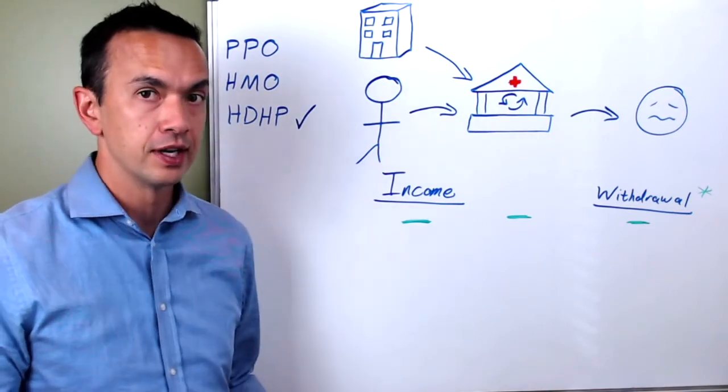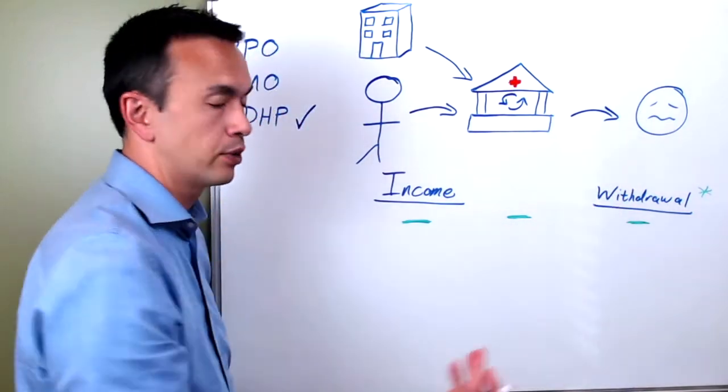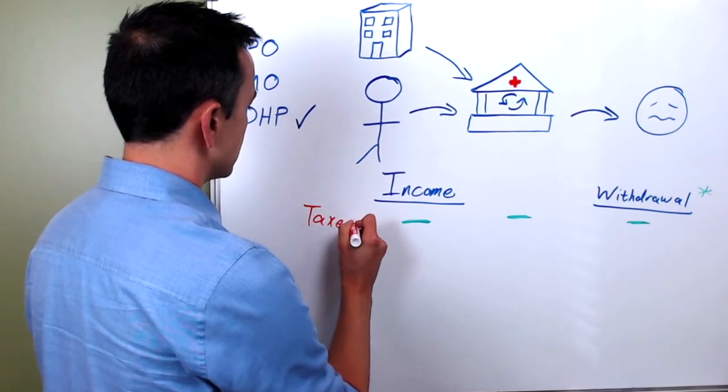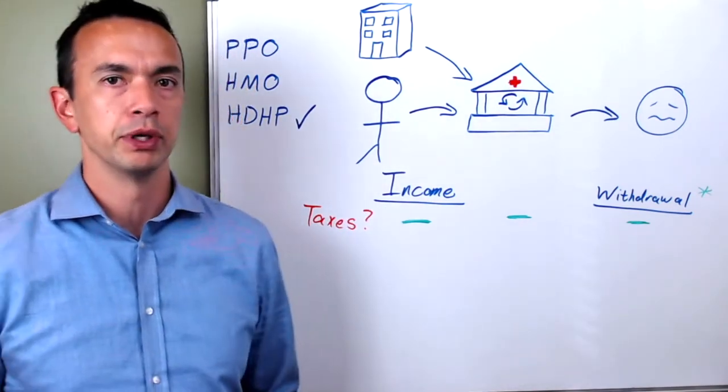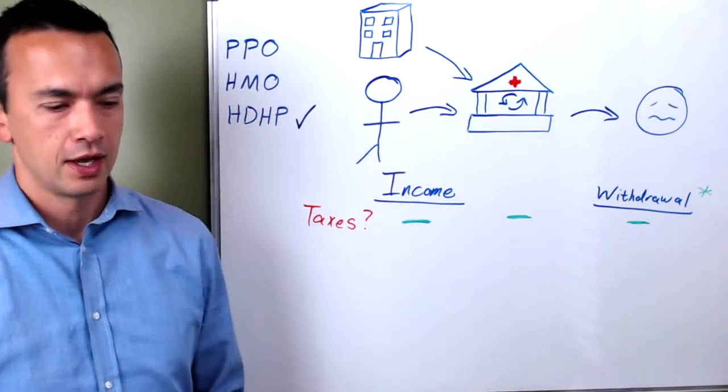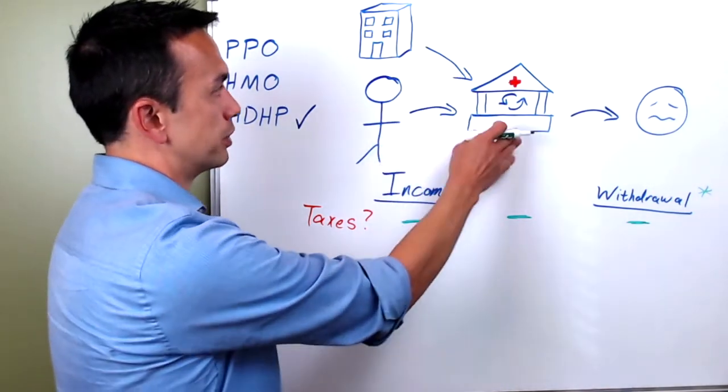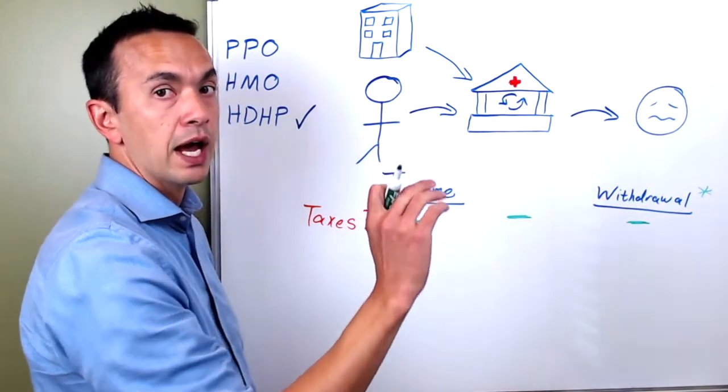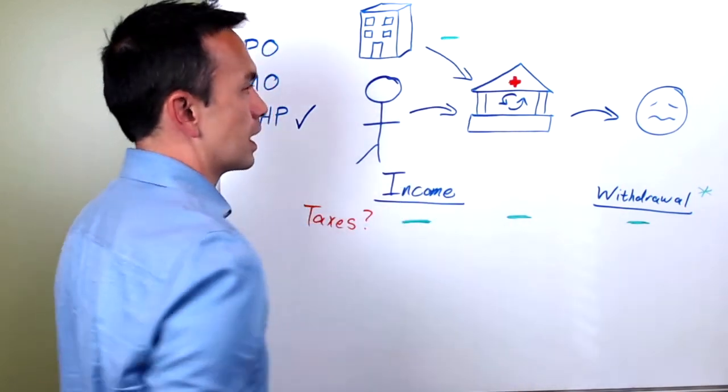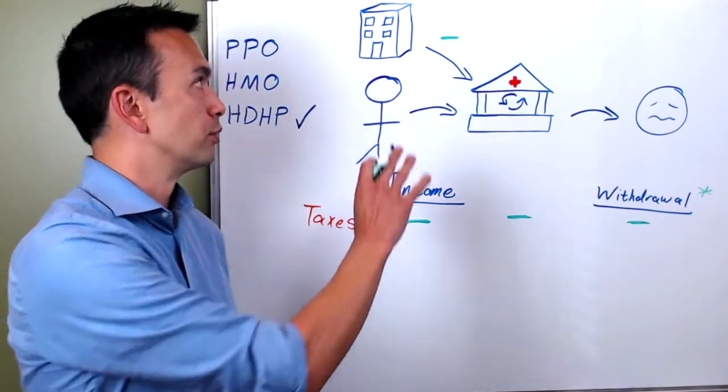So that's kind of the basics of an HSA: how it works, how you get money in, and what you're using it for. The big power is the fact that you're not paying taxes on it in all three of these stages. Sometimes you'll hear people say that it has a triple tax advantage, and this is what they're talking about. And really, if we count this as well, if your employer is the one that's putting the money in there out of your paycheck through payroll deductions, then there's also the extra benefit of not having to pay into Medicare and Social Security for that amount.